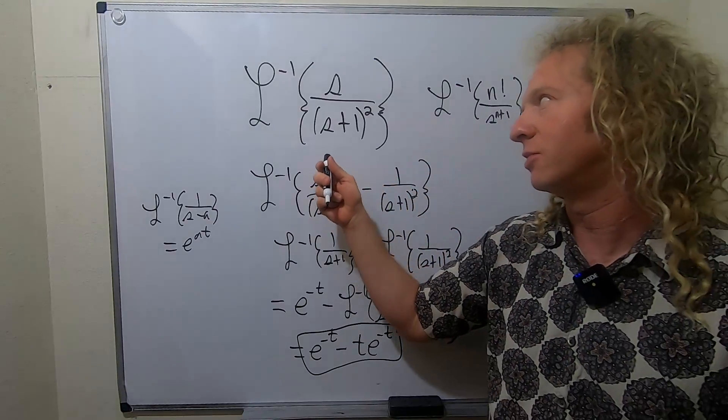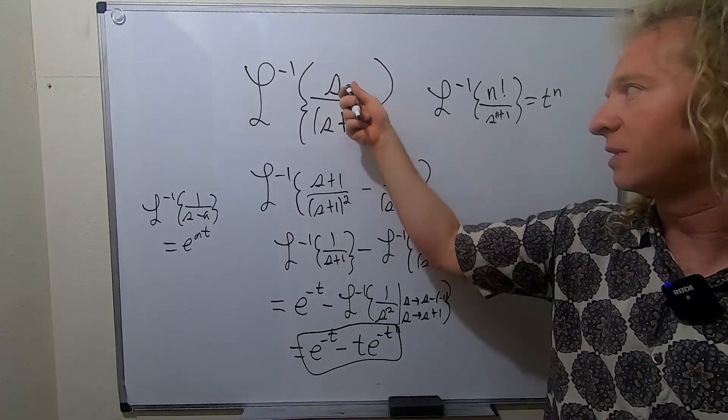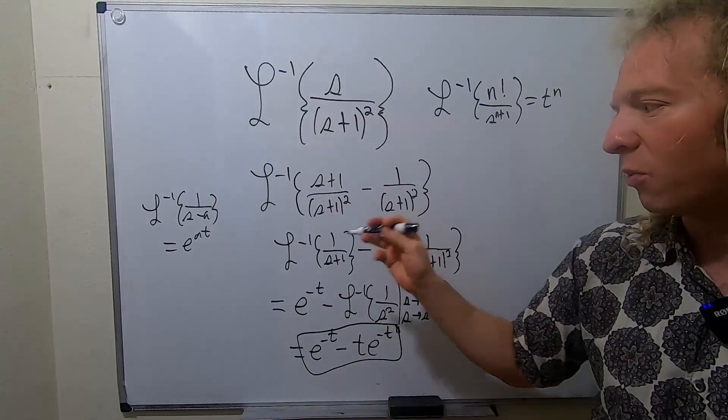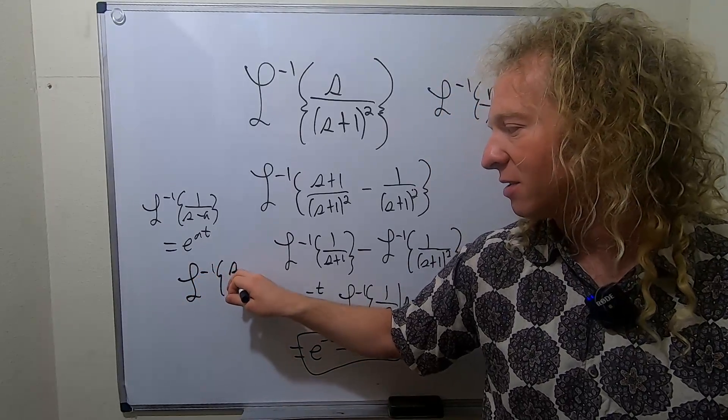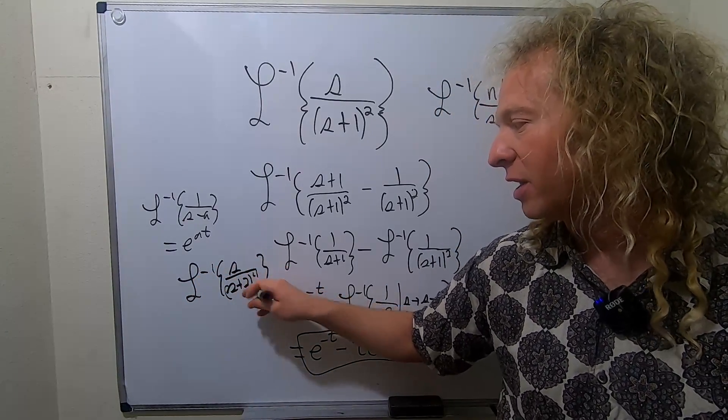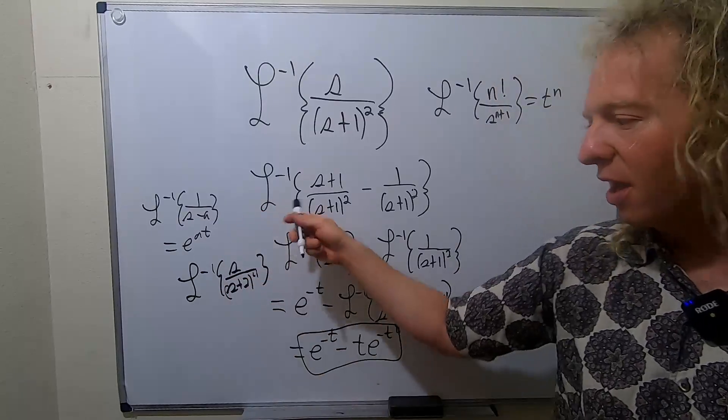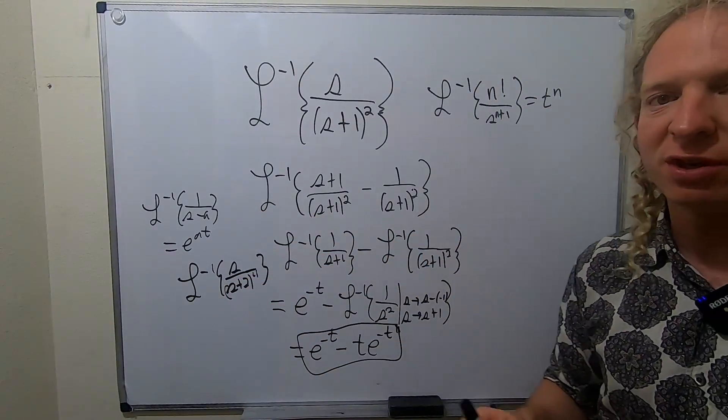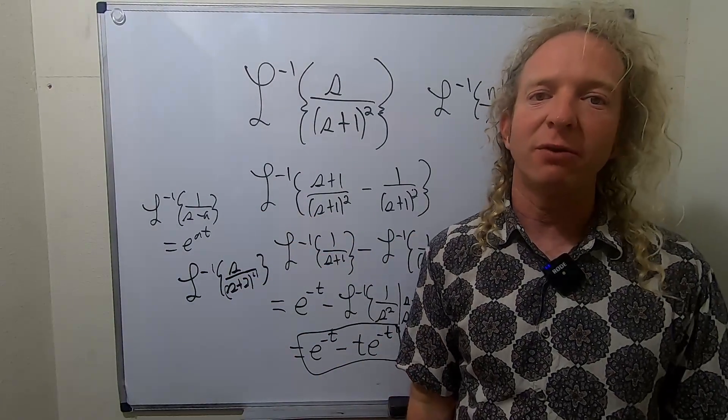So again if you have something like this just add one and subtract one. Like if you had say inverse Laplace of s/(s+2)^4, same idea right? You would add two and subtract two and go through the same process and do some shifts. I hope this video has been helpful, take care.